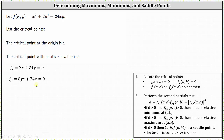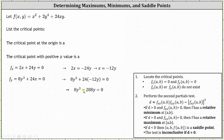Let's solve the system using the method of substitution. We begin by solving the first equation for x: subtracting 24y from both sides gives 2x equals negative 24y, and dividing both sides by 2 gives x equals negative 12y. Substituting negative 12y for x in the second equation, 8y cubed plus 24x equals zero, gives us 8y cubed plus 24 times negative 12y equals zero, which simplifies to 8y cubed minus 288y equals zero. Factoring out the greatest common factor of 8y gives 8y times the quantity y squared minus 36 equals zero.